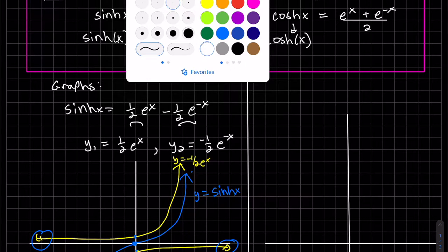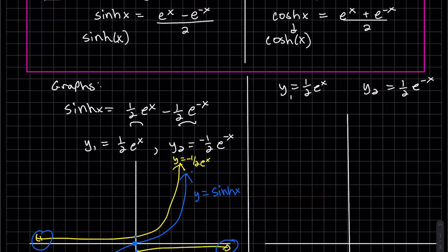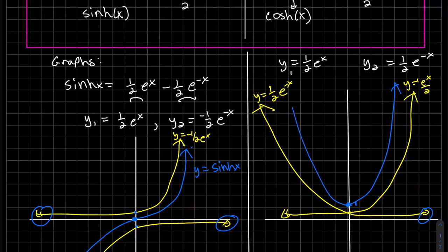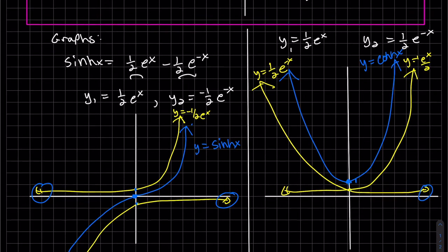So here we are going to add. These are both positive functions. Both are going to cross one half. Half plus a half is going to be one. Again, it's going up because we're adding it to zero. And same with here. And that's going to be an even function.